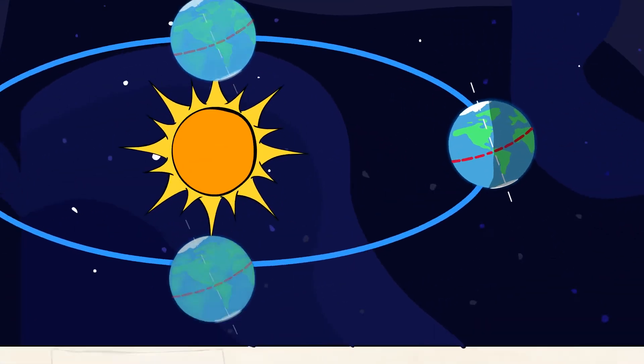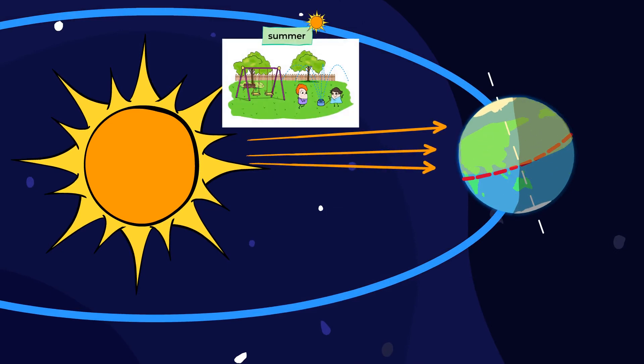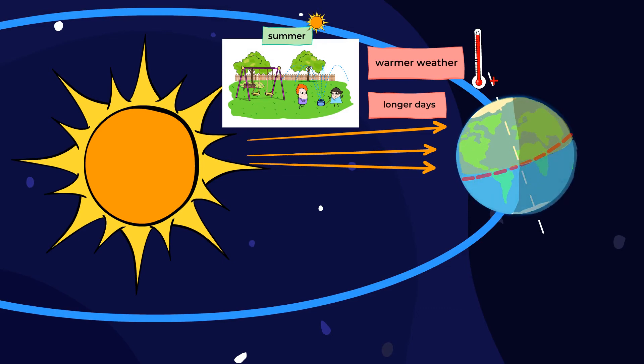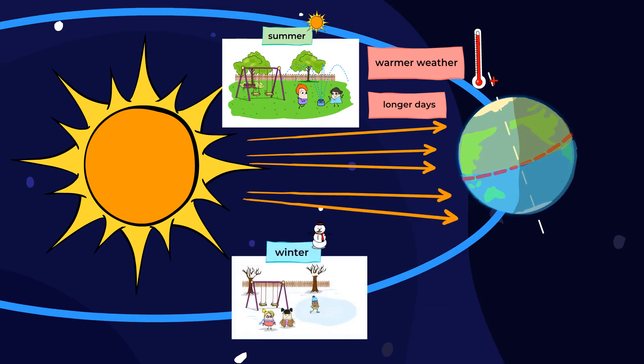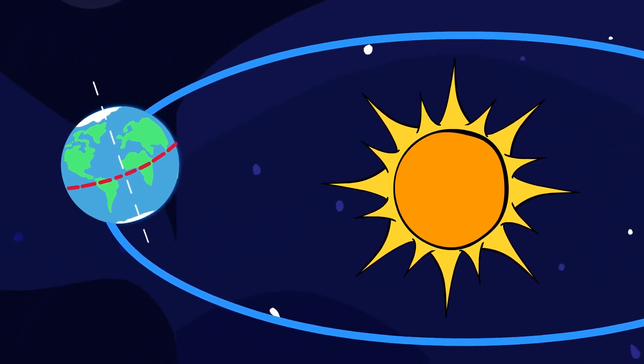The part of the Earth tilted towards the sun gets more direct sunlight. That's why it has longer days and warmer weather. And the opposite part, tilted away, has less sunlight. That's why it has shorter days and cooler weather. But this all changes as Earth keeps orbiting.